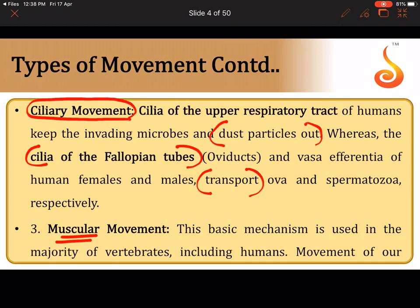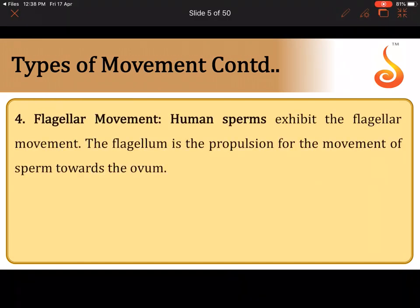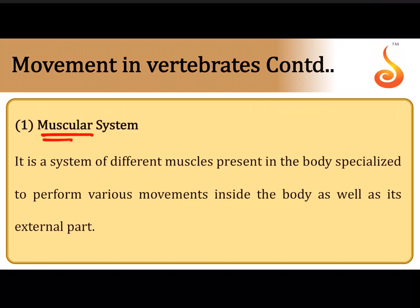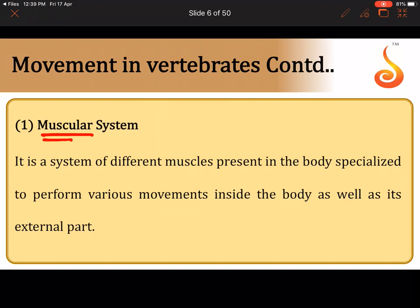This chapter mostly focuses on muscular movement — the movement of jaw muscles, the tongue, and the limbs. Muscles are attached to bones, enabling limb movement. The fourth type is flagellar movement, seen in human sperm, where a flagellum or central axial filament propels the sperm. Any movement that brings about a change in location is referred to as locomotion.